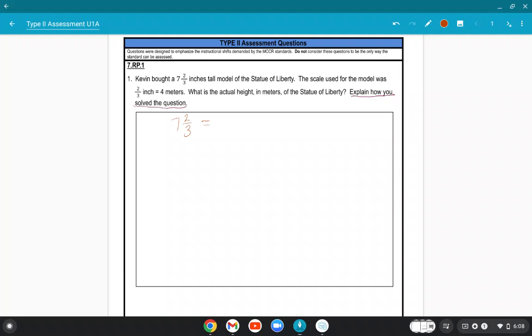which is the 7. 7 times 3 plus 2. Then I'm going to divide by 3. Notice my denominator stays the same. 7 times 3 is 21, plus 2 over 3. It's the same thing as 7 and 2/3rds.